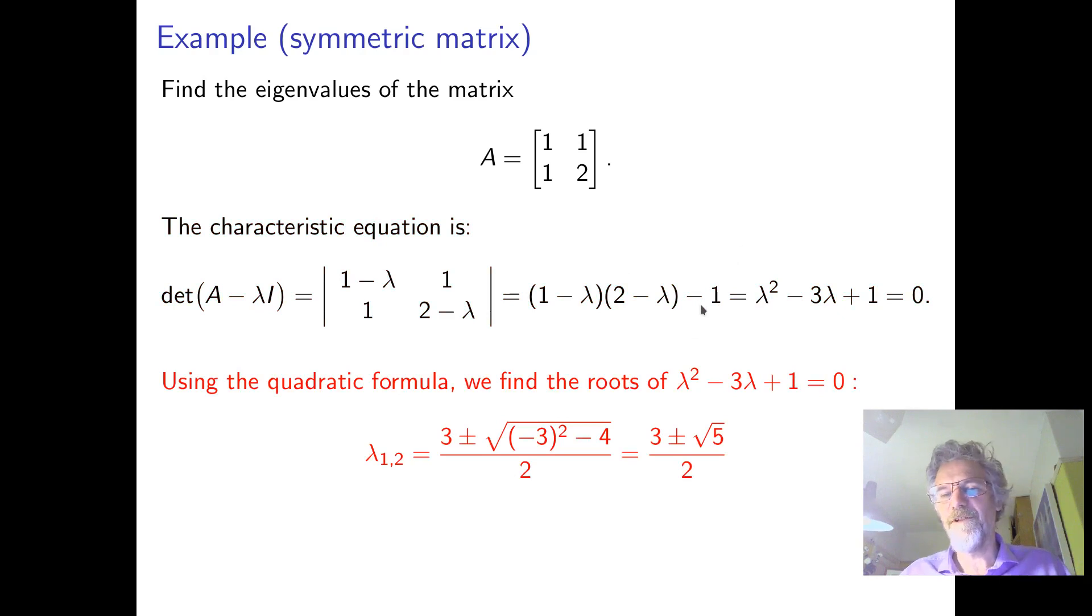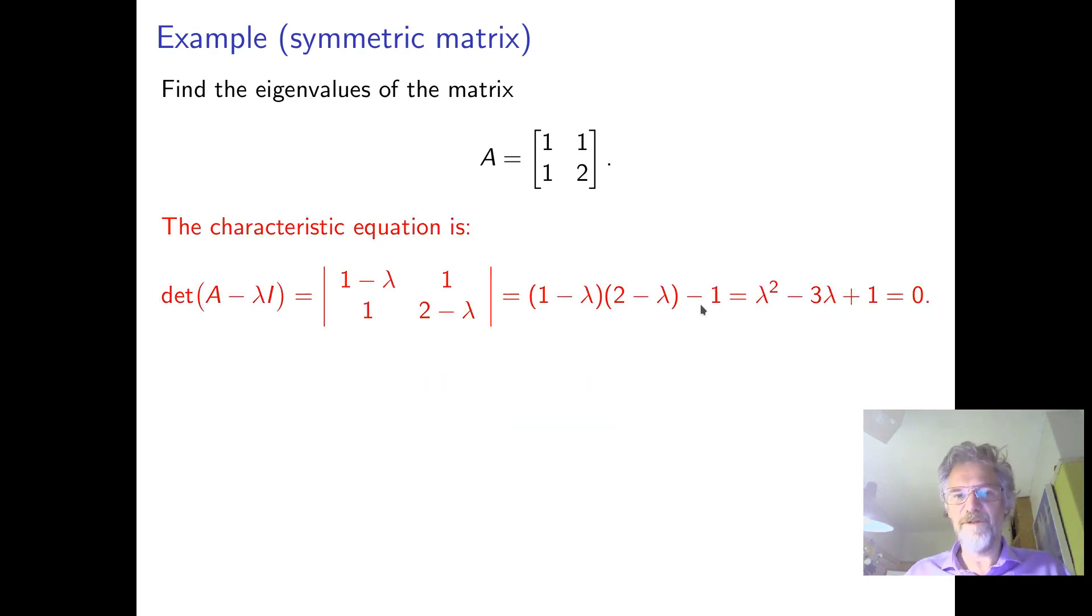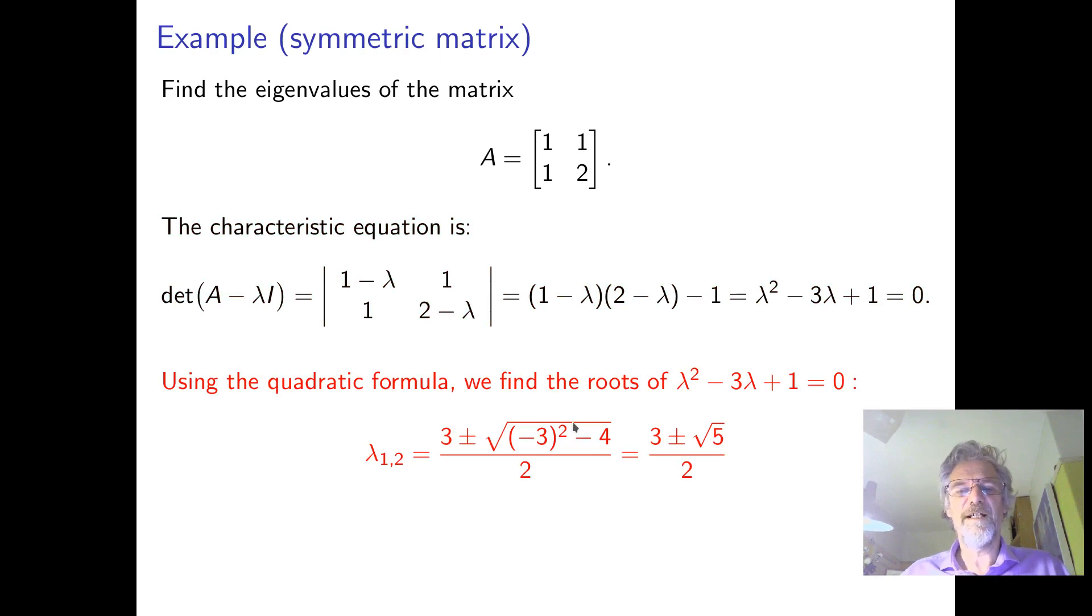So we can find the roots. We may as well go to the formula to solve the quadratic, minus B plus minus square root B squared minus four AC all over two A. Of course, A is one here. So we've got nine minus four is five. So it's three plus and minus root five over two. And that gives us two different roots, which you can call Lambda one and Lambda two. Doesn't matter which way around. So for this more general matrix, it was a little bit different and there were the eigenvalues.